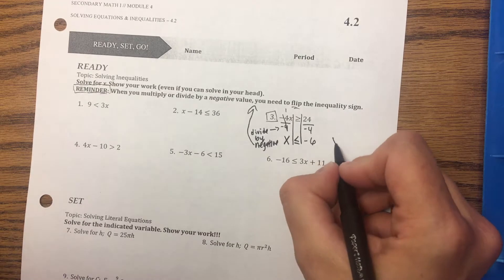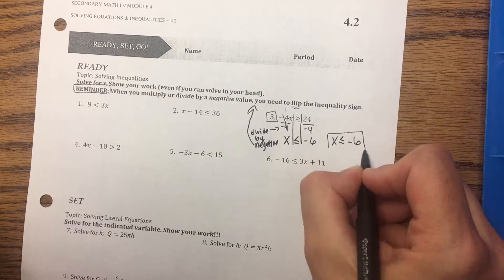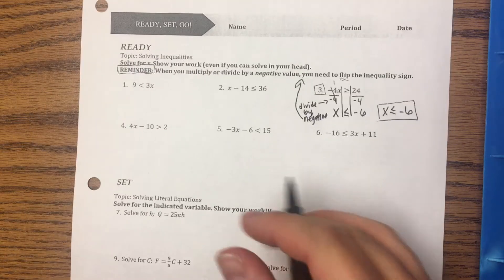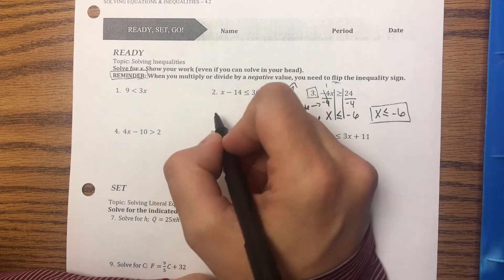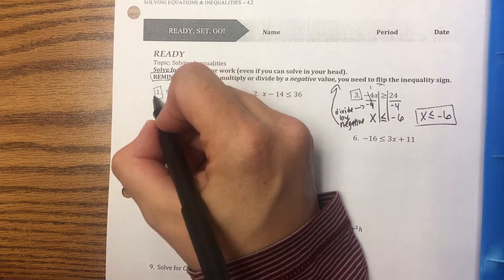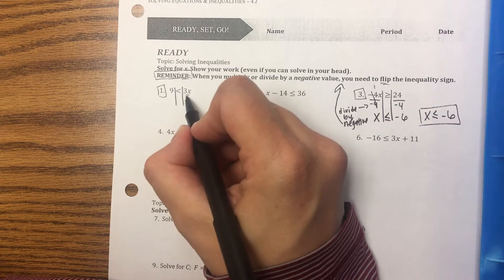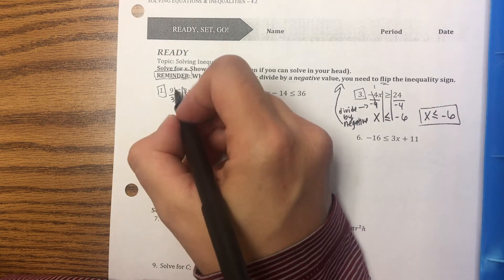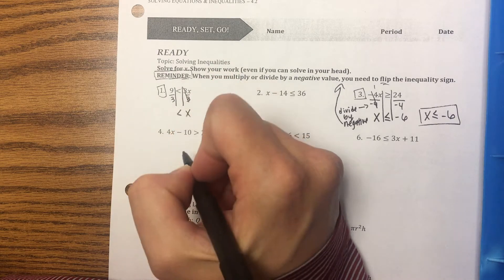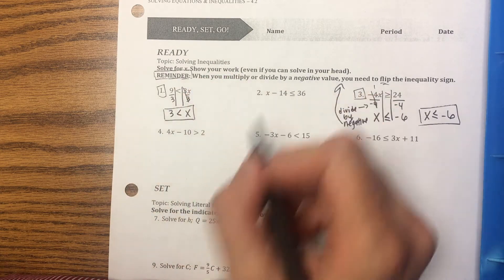And that's my answer: X is less than or equal to negative 6. So when you're not dividing by a negative or multiplying by a negative, like on number one, I'm just dividing both sides by 3. So I have X, and I'm not going to change the inequality. It's greater than 3 because I didn't divide by a negative.